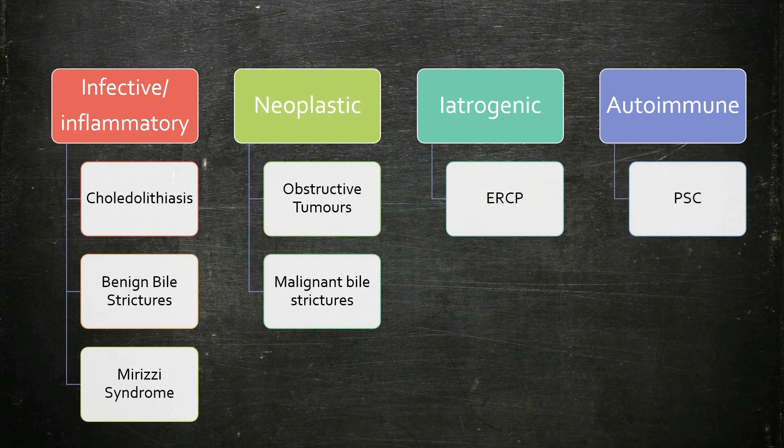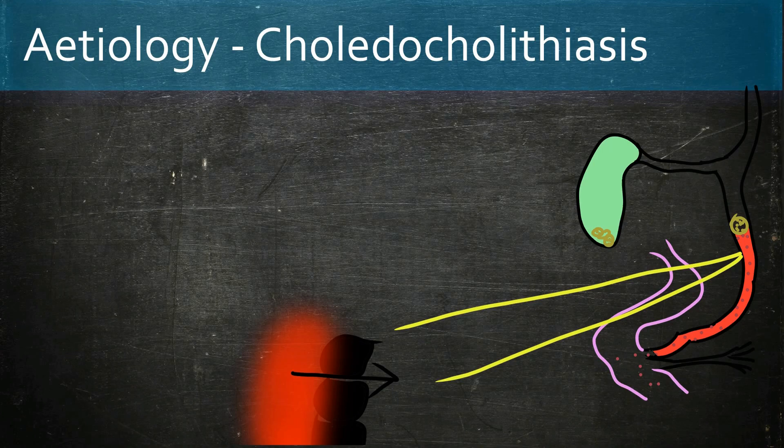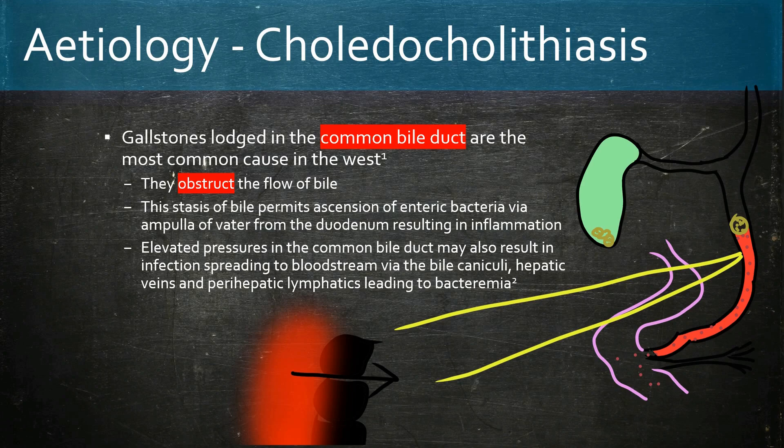Gallstones lodged in the common bile duct are the most common cause of acute cholangitis in the west. Note that the stones have to be in the common bile duct, not the cystic duct, which is the case in cholecystitis. These stones obstruct bile flow and the stasis permits ascension of enteric bacteria from the ampulla of Vater into the normally sterile biliary system, resulting in inflammation.